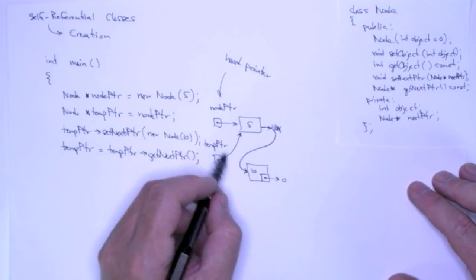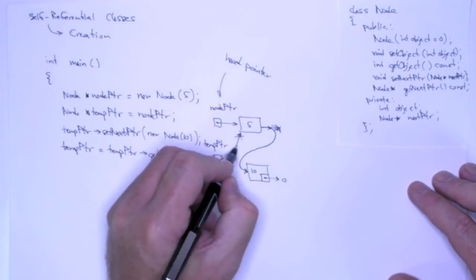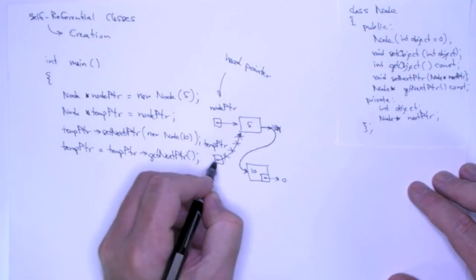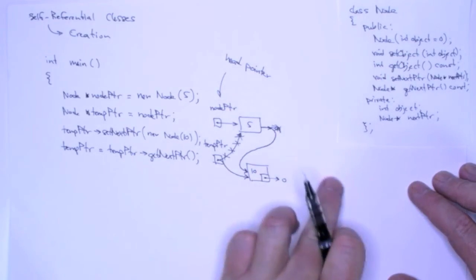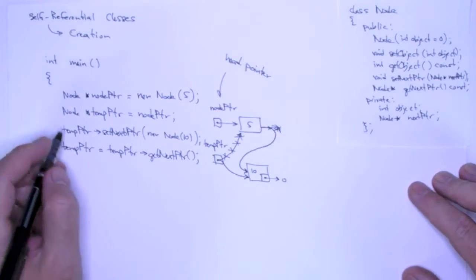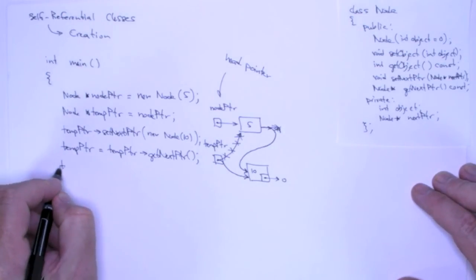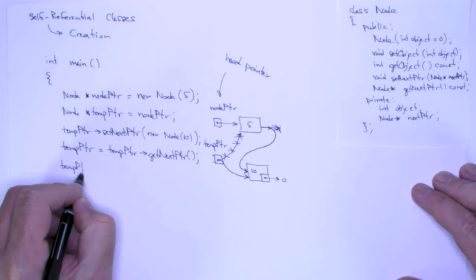That is going to return this address and store it in temp pointer, and so now this is what I have, and I'm prepared to add another node here, and I can do that using exactly the same code with slightly different parameters.